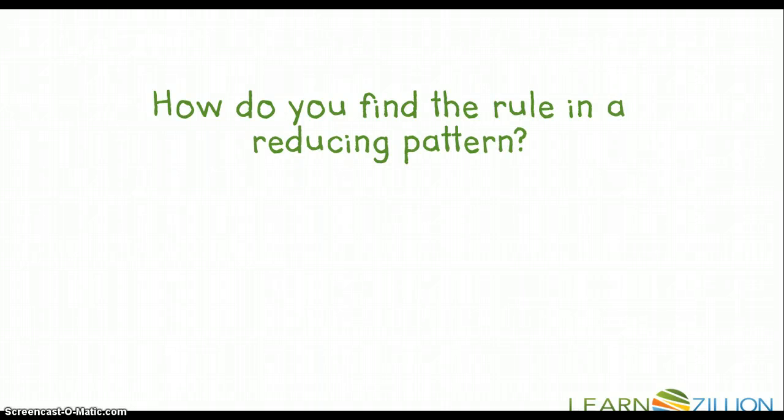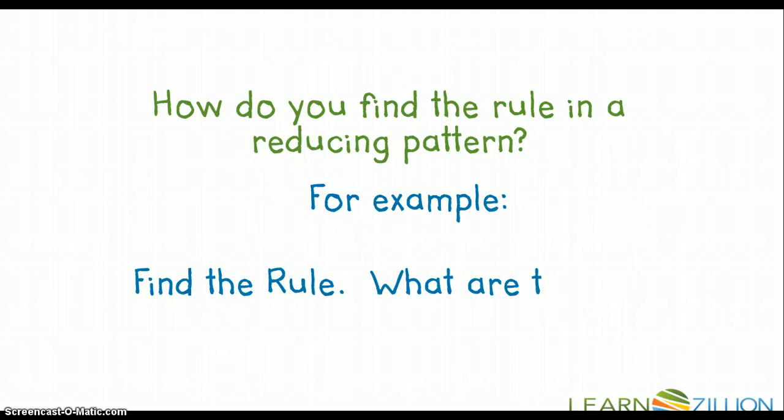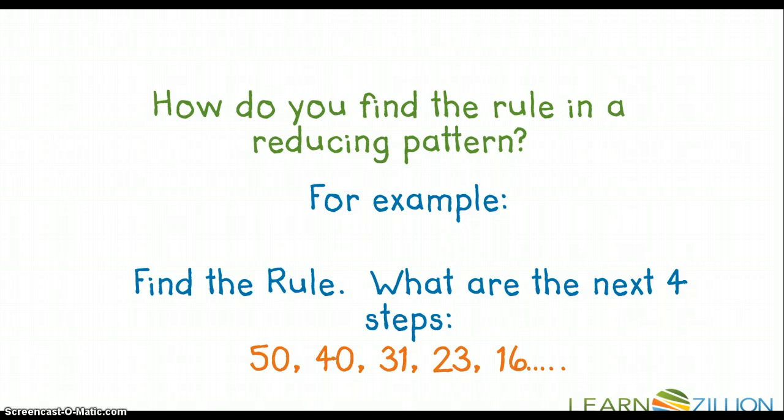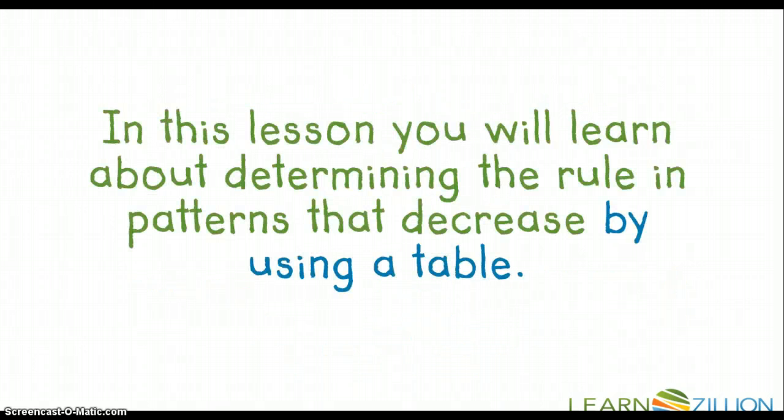So our guiding question of today is how do you find the rule in a reducing pattern or in a pattern where numbers are decreasing? For example, find the rule, what are the next four steps? They give us these numbers: 50, 40, 31, 23, 16. In this lesson, you will learn about determining the rule and patterns that decrease by using a table.